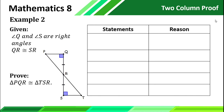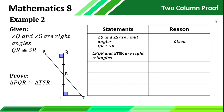For example number 2: given that angle Q and angle S are right angles, and QR is congruent to SR — prove that triangle PQR is congruent to triangle TSR. Again, we copy our given and put 'given' as the reason. If we have right angles, automatically we have right triangles, and those two right triangles are triangle PQR and triangle TSR, by the definition of right triangles.